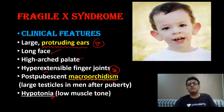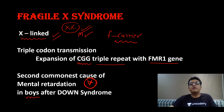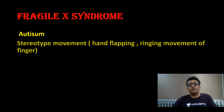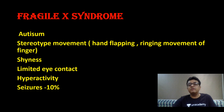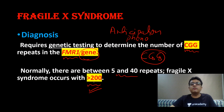To summarize Fragile X: it is an X-linked disorder, mainly X-linked recessive (though a few patients are X-linked dominant). Triple codon repeat transmission. It is the second commonest cause of mental retardation after Down syndrome. Key features: large testes and large ears. Neurological features: autistic child, seizures in 10%. Diagnosis requires demonstrating CGG repeat at FMR1 gene location with repeat count more than 200. Williams done, Fragile X syndrome done.